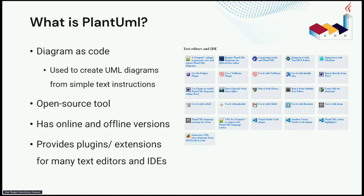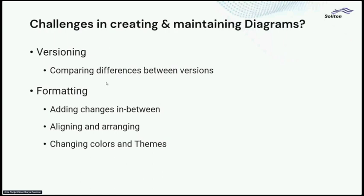I'll explain the challenges we face when creating and maintaining UML diagrams. The primary issue is versioning — these diagrams are usually binary files, which we cannot easily compare with source code control. If there is a change, we may not be able to easily identify it or revert it if required. The next issue is formatting: aligning, adding colors, and themes. If we want to insert a change in a flowchart or sequence diagram, it becomes a time-consuming job to rearrange all the existing elements.